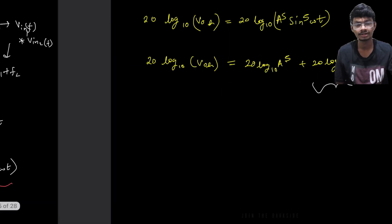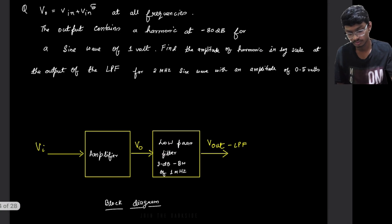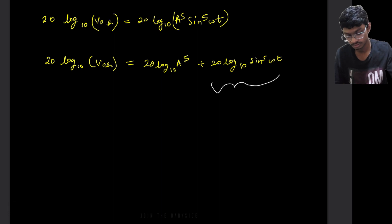Now the value for this part is already given. What is the value? The value is basically minus 80 dBs. So we have got the value for this one. Now we just need to find the value of this part for getting the output of the amplifier.